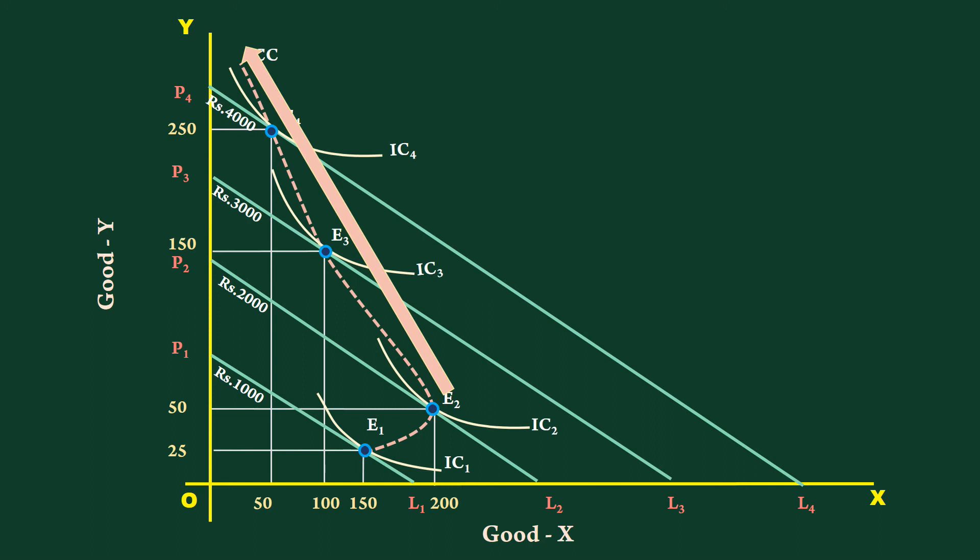Inferior good is one for which there is negative relation between income and quantity demanded. What is to be noted here is, when inferior good, good X is represented along the X axis and normal good, good Y along the Y axis, the shape of the income consumption curve is backward bending towards Y axis.